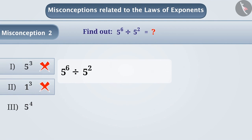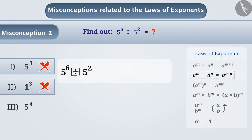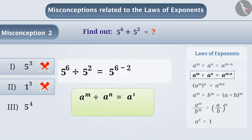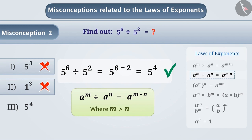The correct understanding is that when we divide two numbers that have the same base, we keep the base the same and subtract the exponents. That is, a to the power of m divided by a to the power of n is equal to a to the power of m minus n, where m is greater than n. In this way, phi to the power of 6 divided by phi to the power of 2 is equal to phi to the power of 6 minus 2, which is equal to phi to the power of 4, which is the correct answer. Therefore, the correct answer is option 3.